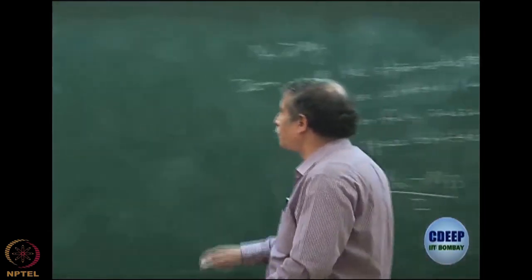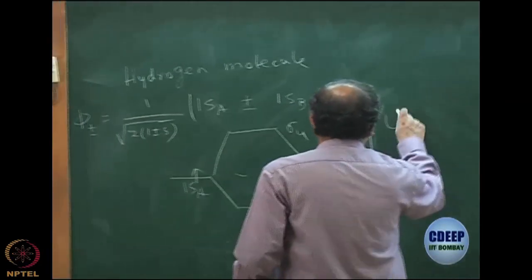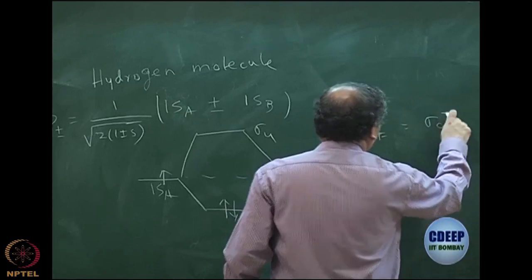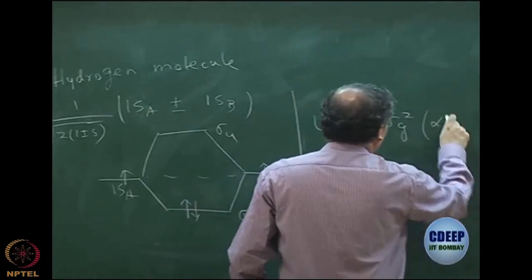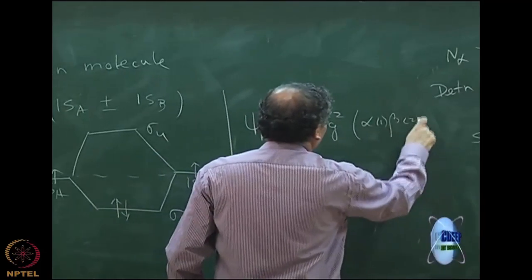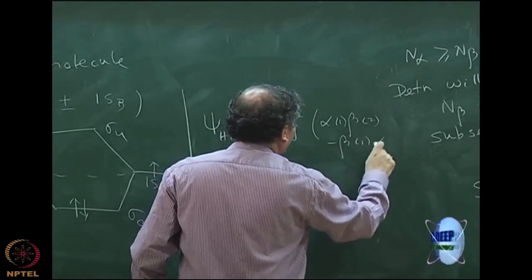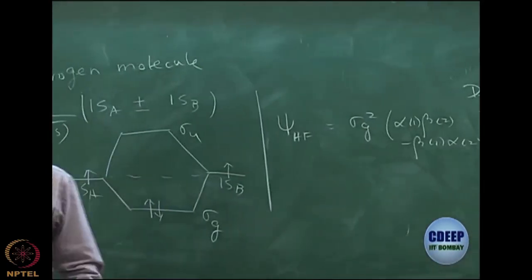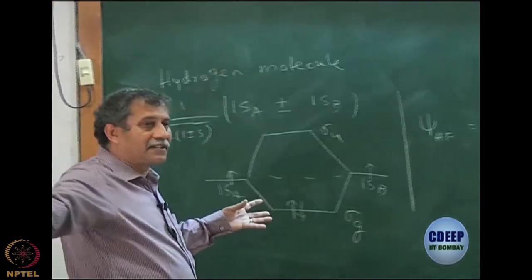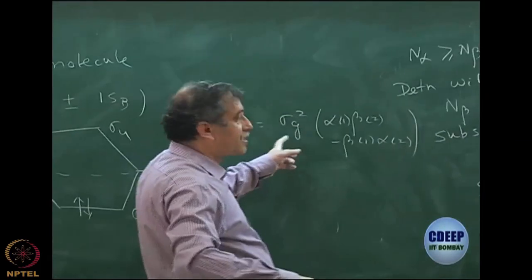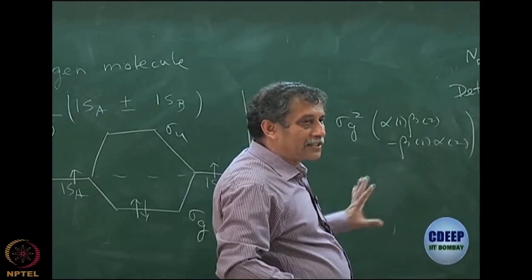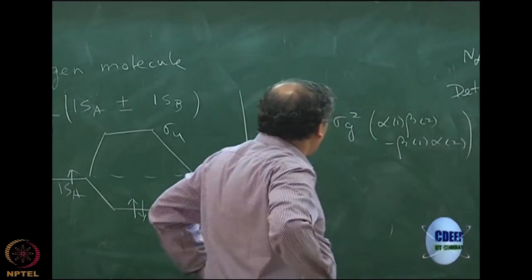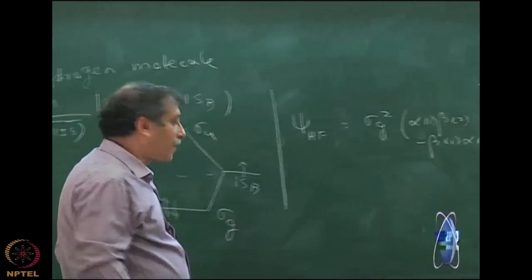My Hartree-Fock wave function for hydrogen molecule is sigma_g square for the space part, and then you have alpha1 beta2 minus beta1 alpha2. That is trivial to show because you have sigma_g alpha and sigma_g beta. If you expand the determinant, you have sigma_g(1) sigma_g(2) and a singlet part. This is a singlet.